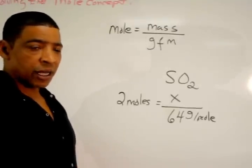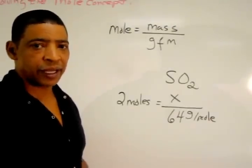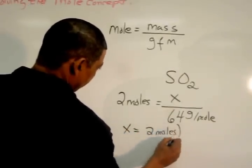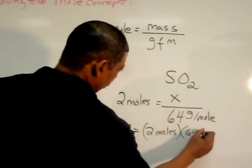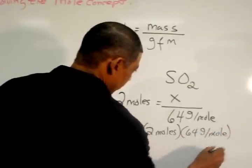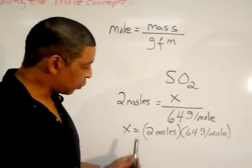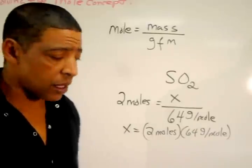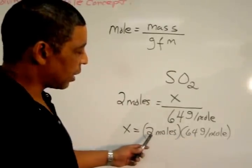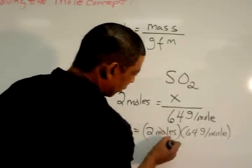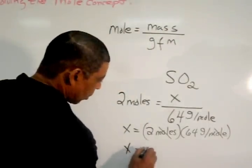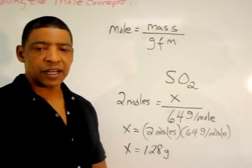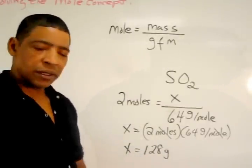To write the final numerical setup for this calculation, we simply solve for X, where X is equal to 2 moles times 64 grams per mole. On the New York State Regents Exam, this would represent a final numerical setup. To determine the calculated result, simply multiply 64 times 2. Of course, in the process, canceling the moles. X is equal to 128 grams. So, 2 moles of sulfur dioxide is equal to 128 grams.